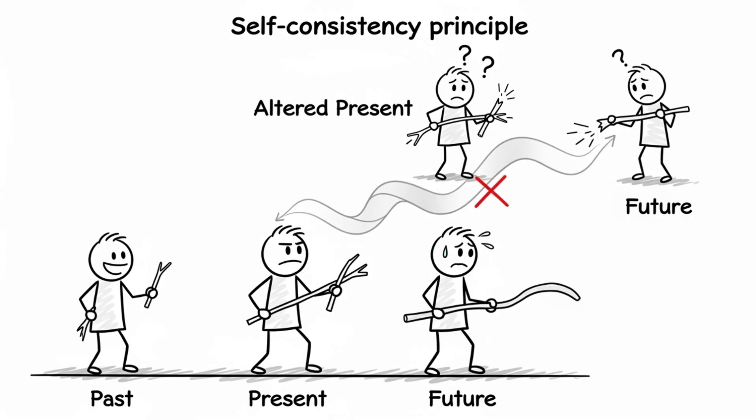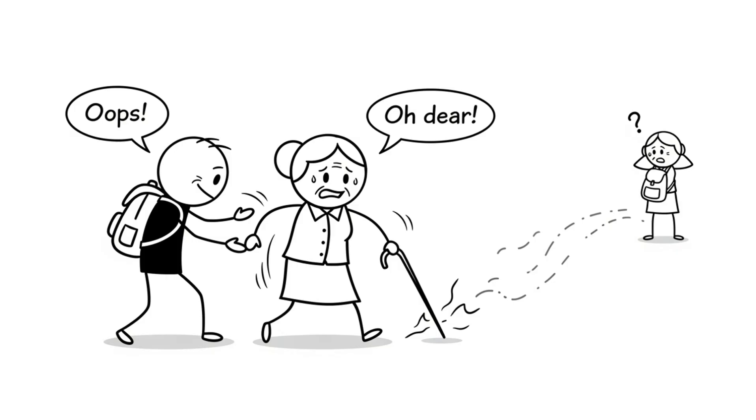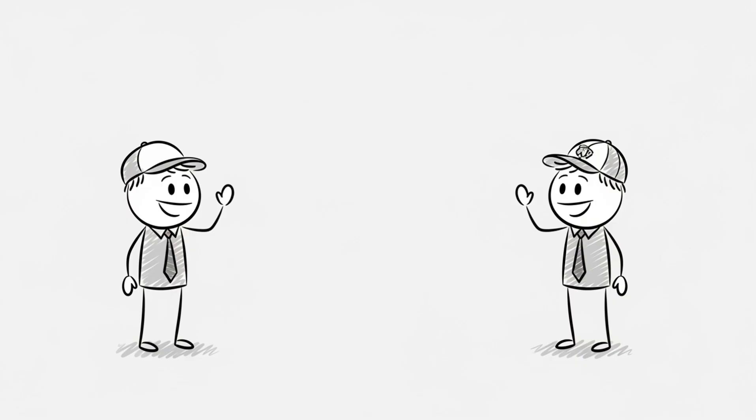Some scientists suggest the self-consistency principle: the idea that the universe won't allow contradictions. So if you go back in time, you can't actually change the past. Maybe you always were part of history, and your actions were meant to happen.